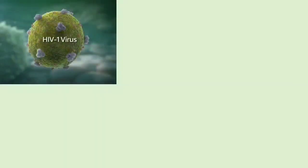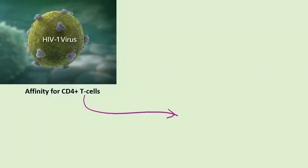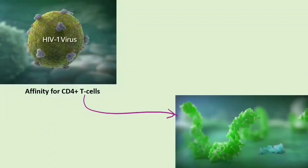HIV-1 virus has a special affinity for CD4 plus T cells. If we look at the surface of CD4 T cells, you will find that the CD4 receptor has an extracellular domain comprising four subdomains, sometimes called D1, D2, D3 and D4. It is the D1 and D2 part which we are concerned with.